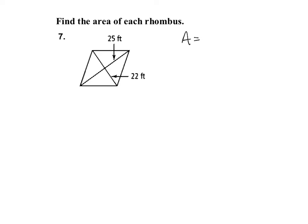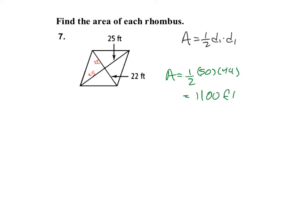For this rhombus, the area is one-half of the product of the diagonals — the same formula as a kite. The diagonals of a rhombus bisect each other, so if one half-diagonal is 25, the full diagonal is 50; and if the other half is 22, that full diagonal is 44. So the area equals one-half of 50 times 44, which is 1100 square feet.